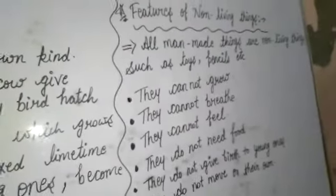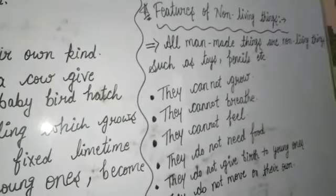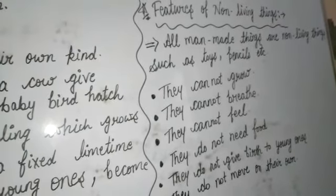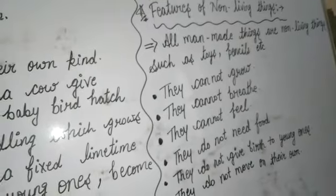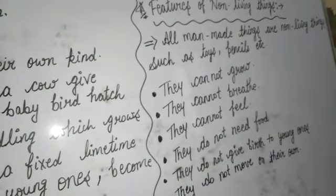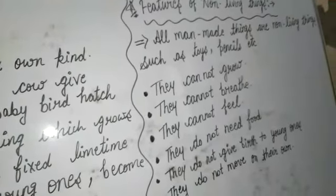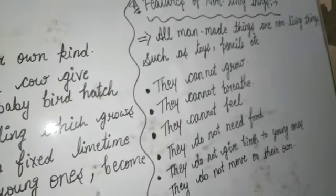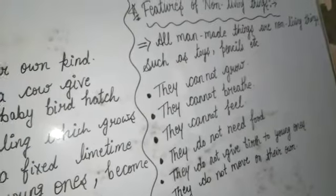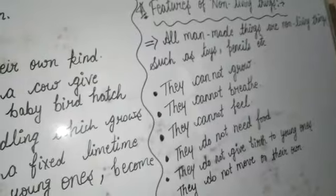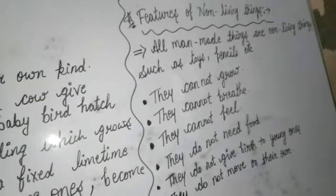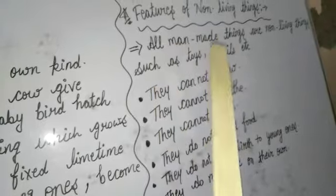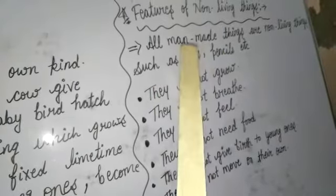Non-living things कौन सी होती हैं बेटा? Living things के बिल्कुल opposite चीज़ होती हैं — non-living things. जैसे कि living things grow करती हैं, बढ़ती हैं, लेकिन non-living things cannot grow. Living things को सांस लेने की जरूरत होती है, non-living things को सांस लेने की जरूरत नहीं होती. Non-living things कुछ भी feel, महसूस नहीं कर सकतीं. So जो features of non-living things हैं, वो living things के बिल्कुल opposite हैं. All man-made things — जितनी भी चीज़ें इंसान ने खुद बनाई हैं, वो सारी non-living हैं.